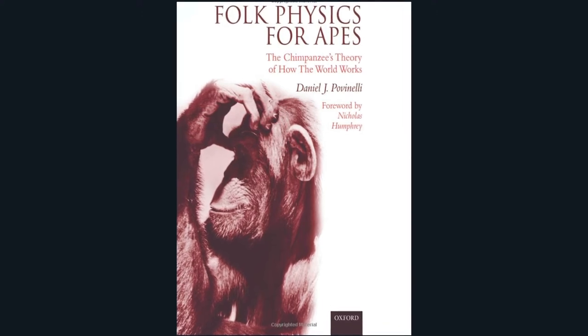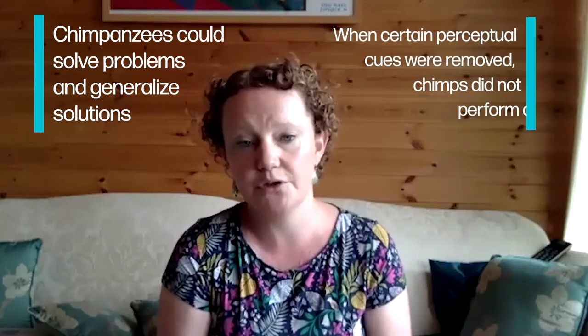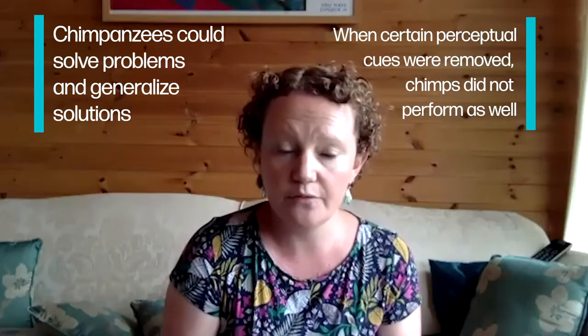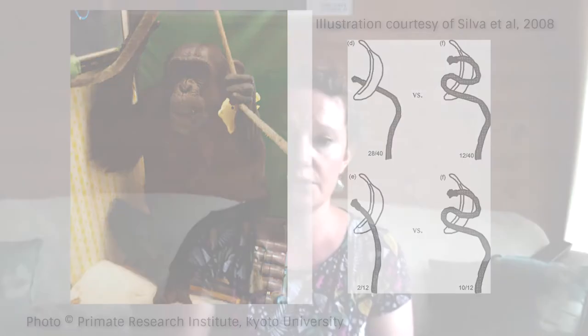Povinelli worked with five chimpanzees and found that they could solve lots of different problems and generalise their solutions across different examples. But when he removed certain perceptual cues, he found that they did not perform so well. In a trickier example, you need to pull a rope with a banana resting on top of it rather than one with the rope looped around it, and their performance wasn't as good. He suggested that the optics of the situation is what explains the ape's behaviour, not an abstract understanding of physical properties.